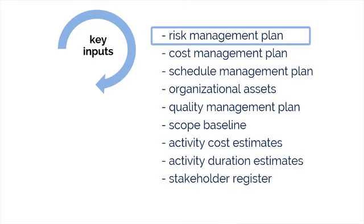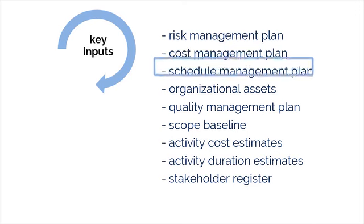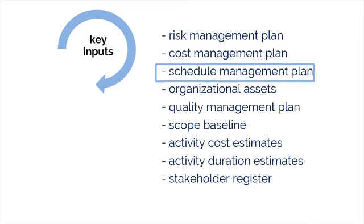Risk management plan — this document outlines how we are going to manage risks on the project. Cost management plan — through this, we can use processes and controls to identify risks across the entire project. Schedule management plan — this helps us manage our time and schedule objectives, knowing all the while that they could be affected by known and unknown risks.